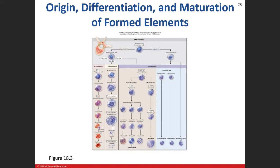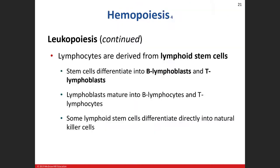It gets a little confusing because leukopoiesis involves two different stem cell lines to get our white blood cells. The other part of leukopoiesis comes from the lymphoid stem cell line.